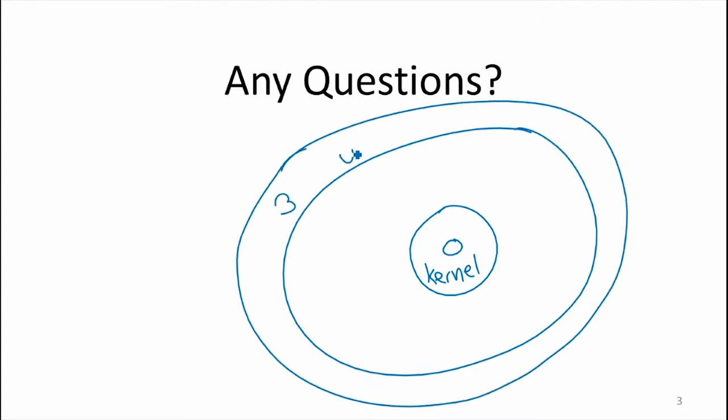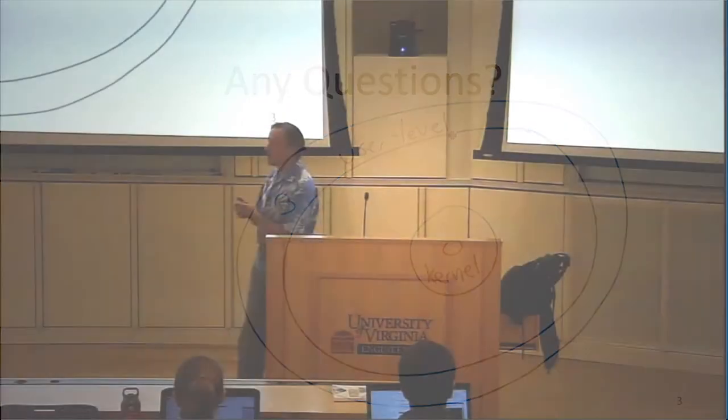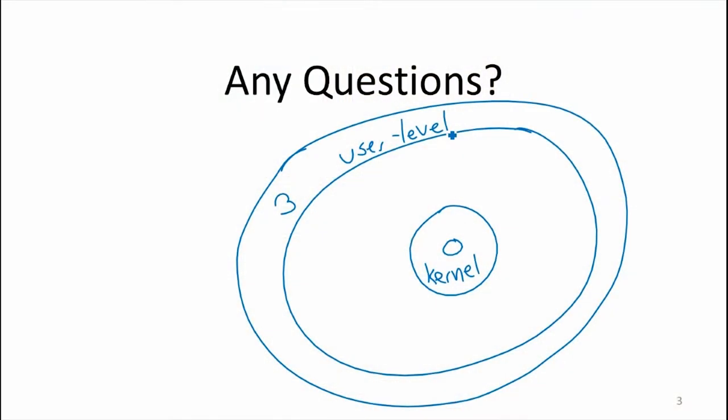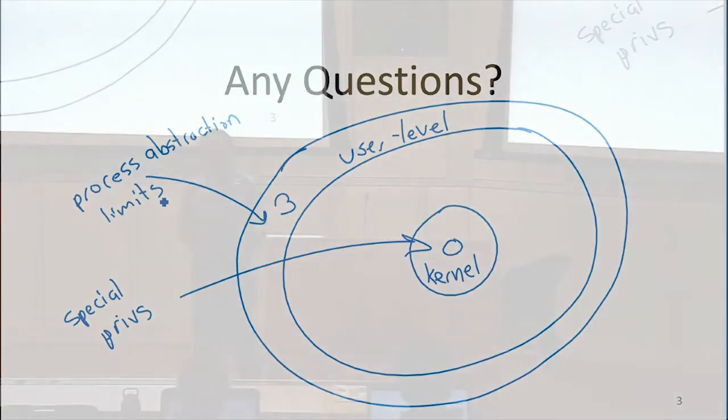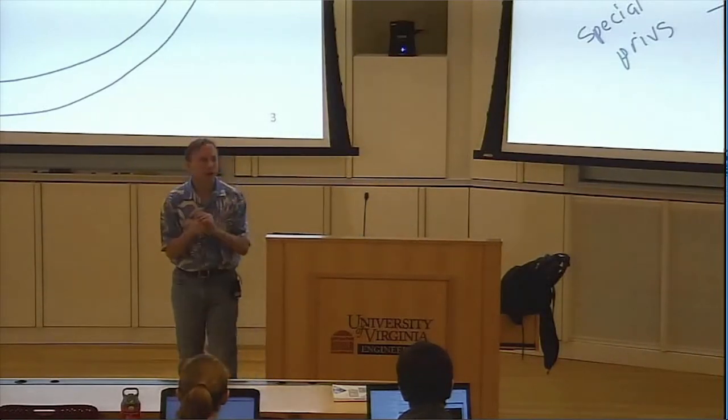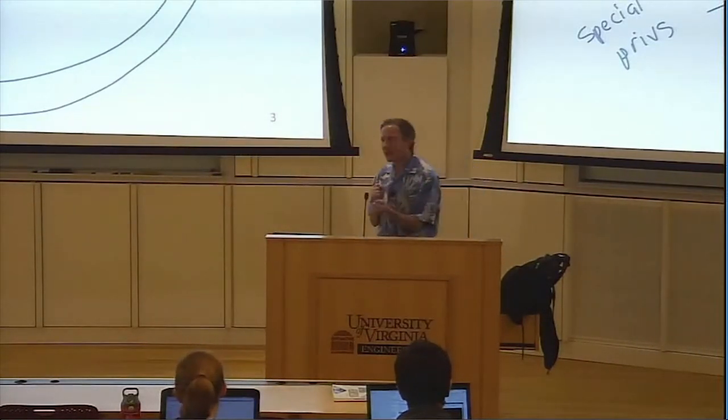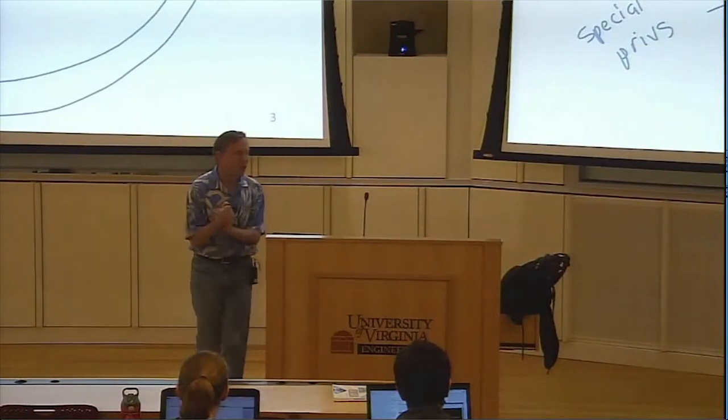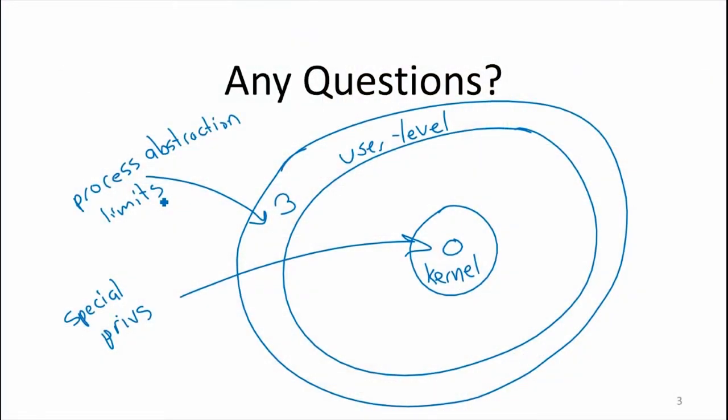And kernel-level has special privileges, can execute those privileged instructions. And at user-level, we have these process abstractions and limits. All the programs that are running at user-level are running within their own memory space, so only have access to that part of the machine. So, where do you want the shell to run? Or where does your GAS run? Yeah. Okay, good. Yeah, so this is where GAS is running.